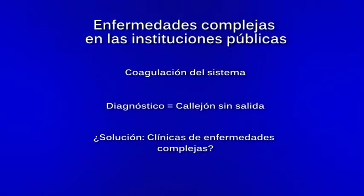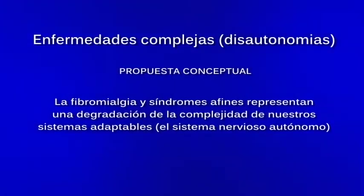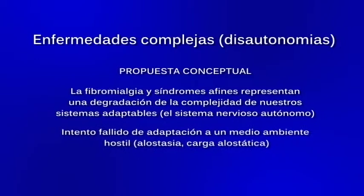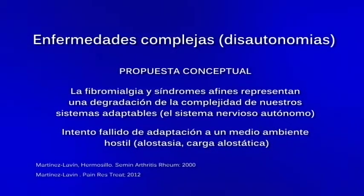¿Cuál sería la solución? Clínicas de enfermedades complejas. Nuestra propuesta, desde hace muchos años, es que la fibromialgia y síndromes afines representan una degradación de la complejidad de nuestros sistemas adaptables, específicamente el sistema nervioso autónomo, como un intento fallido de adaptación a un medio ambiente hostil. Estas personas están forzando la máquina de manera constante, y nos hemos puesto a estudiar el sistema nervioso autónomo como nuestro principal sistema adaptable complejo.